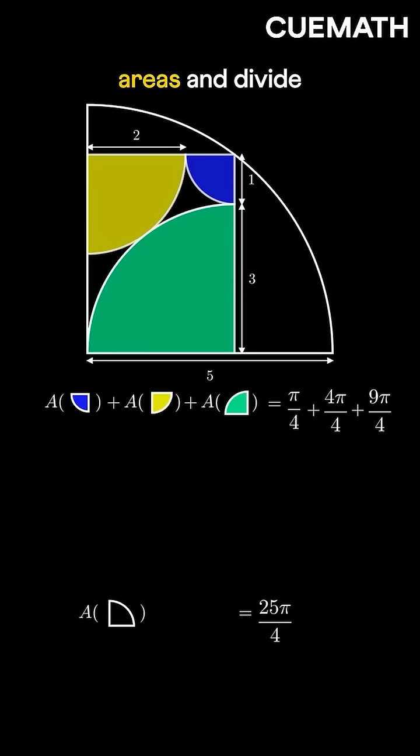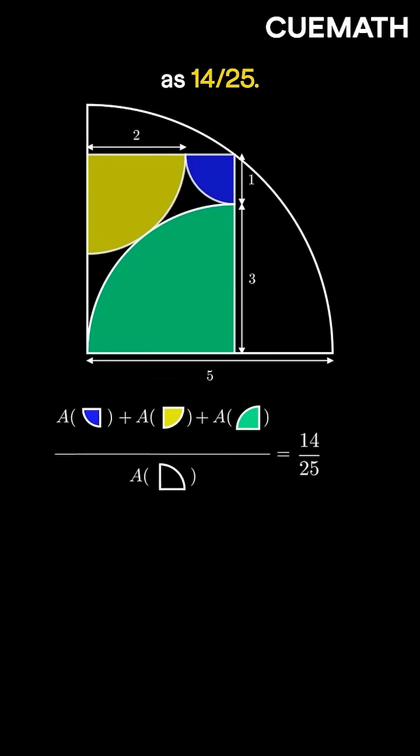If we add these three areas and divide by the total, we get the shaded fraction as 14 by 25.